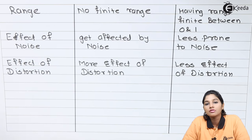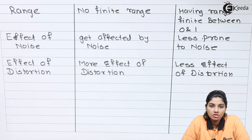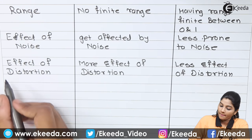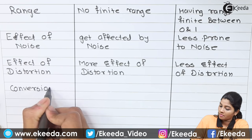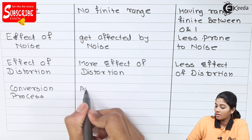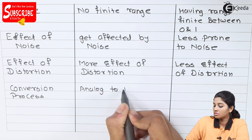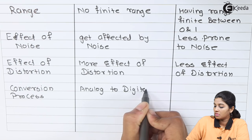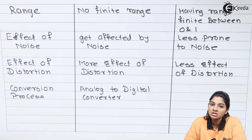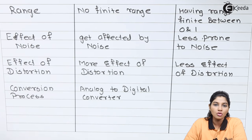For the conversion process, an analog signal can be converted into a digital signal by using an analog to digital converter, and a digital signal can be converted into an analog signal by using a digital to analog converter. So to convert analog to digital we require an analog to digital converter, and to convert digital to analog we require a digital to analog converter.